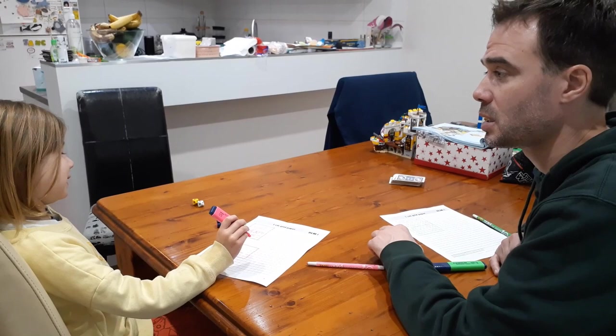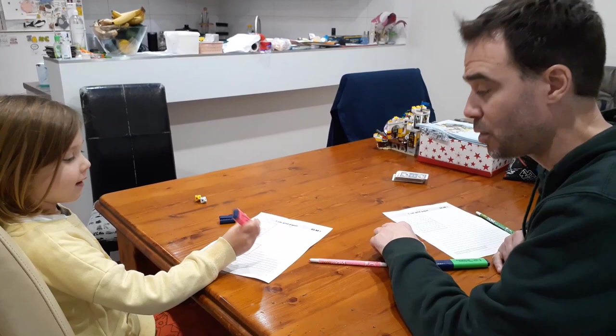So if ten groups of six is 60, what would nine groups of six be? If ten groups of 60, we're going to take off one group of six. Sixty take away six. That's 54.